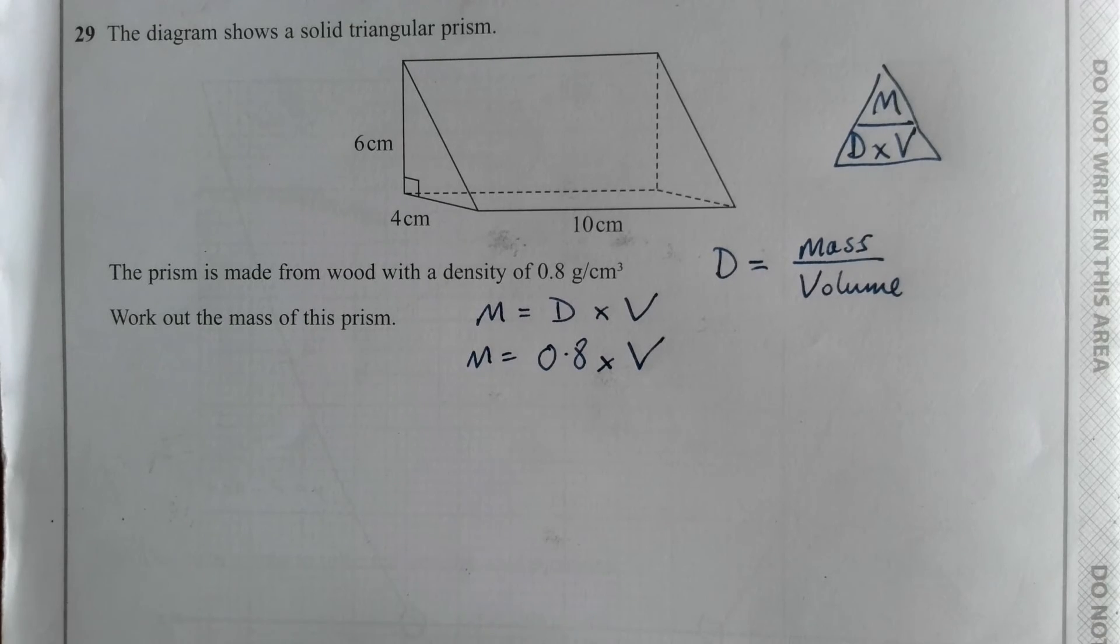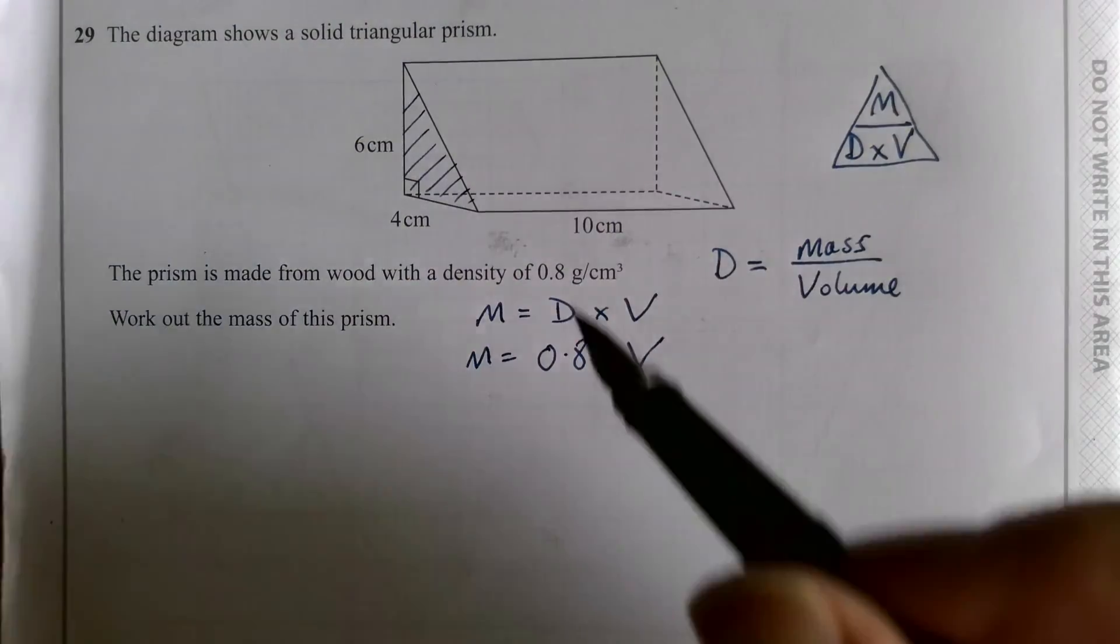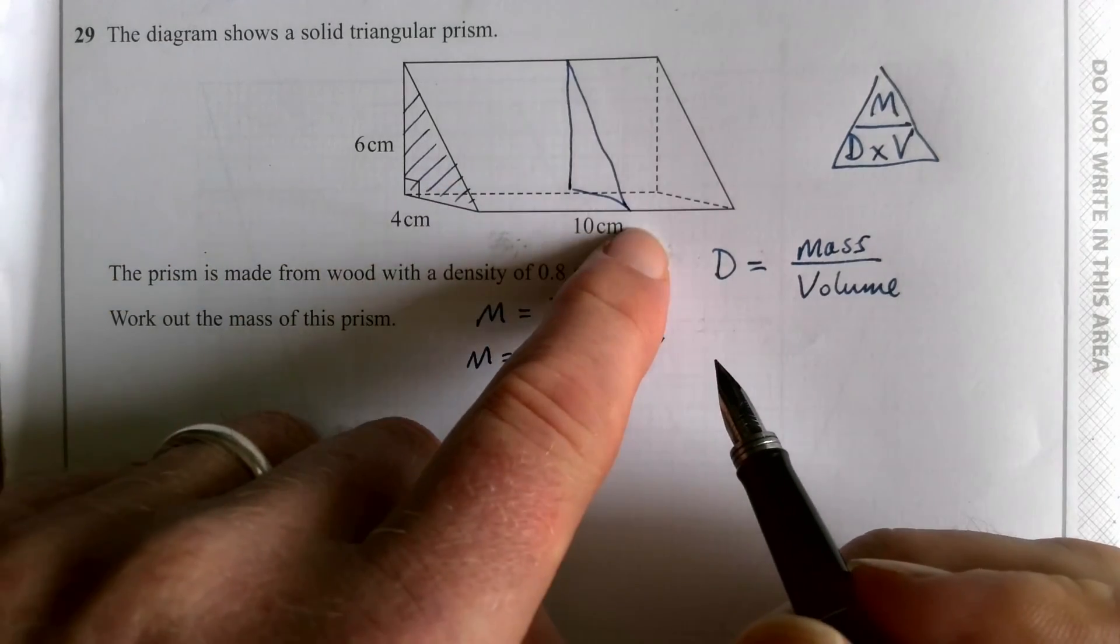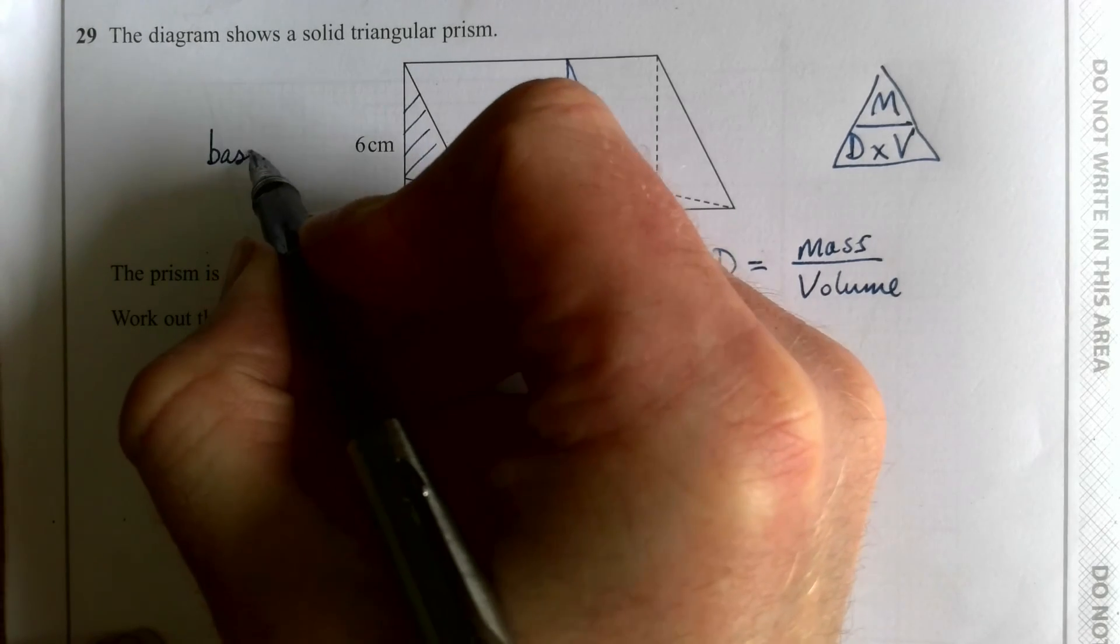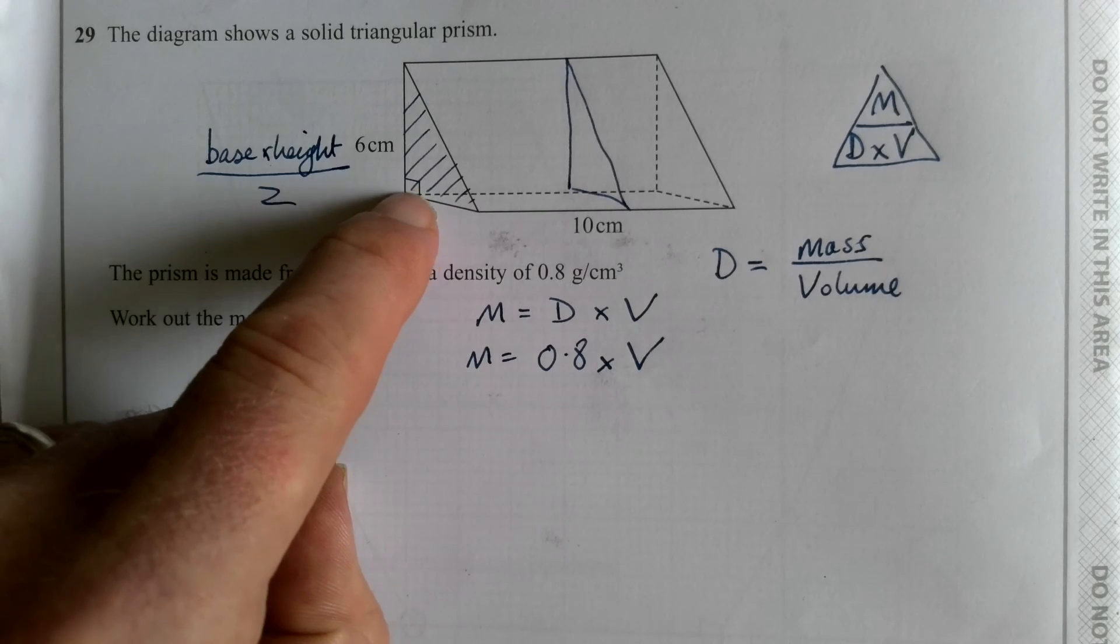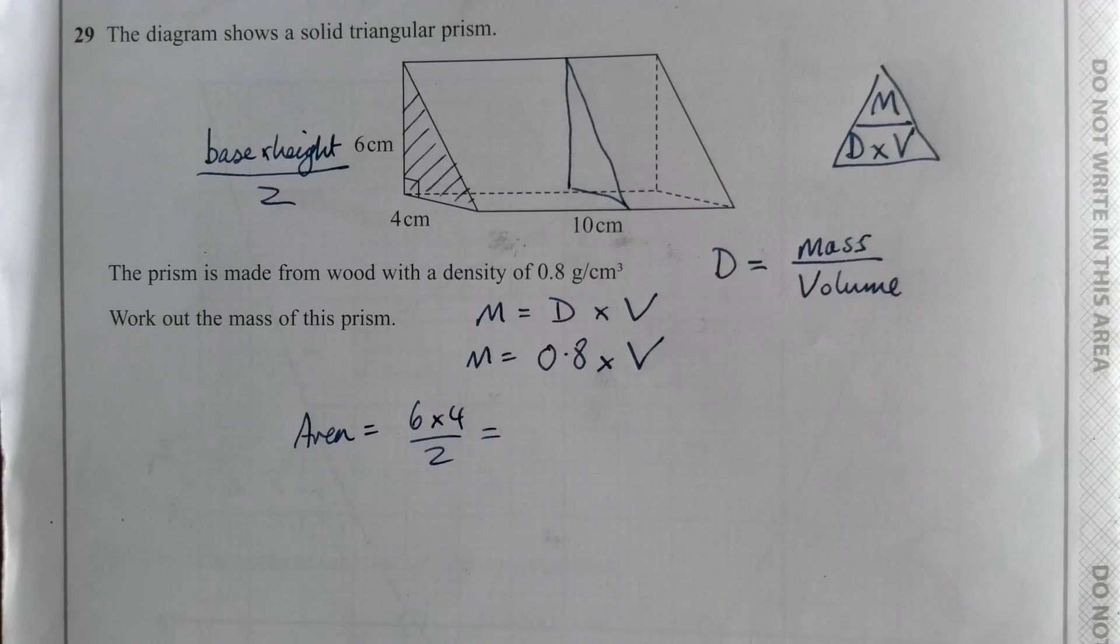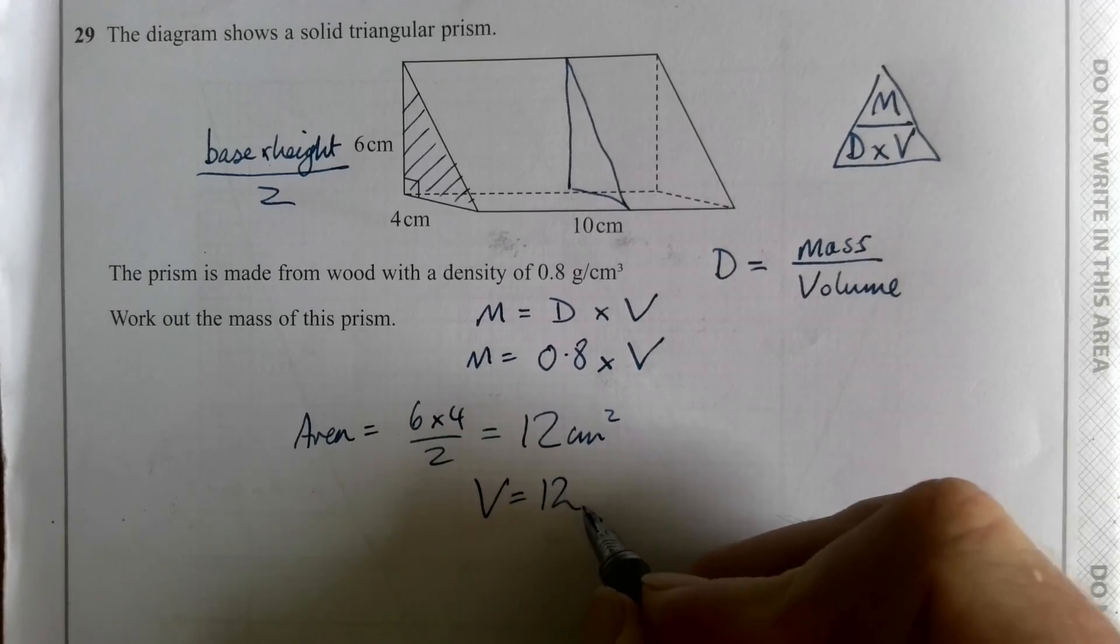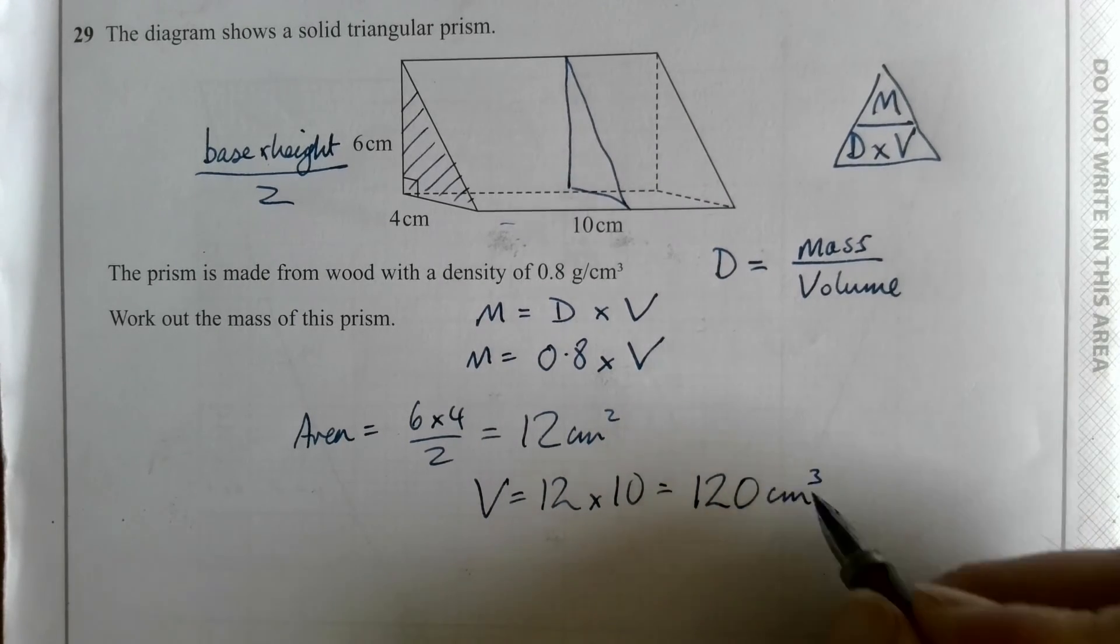Right, now the volume of a cuboid is length times width times height. The volume of any prism is the cross-sectional area multiplied by the depth. Any time I cut through this shape, I would get that same cross-sectional shape, wouldn't I? So I work out that area and I times it by the depth. So the area of a triangle is base times height divided by 2. Or base times perpendicular height, which just means where you've got 90 degrees. We've got 90 degrees there. So area is going to be 6 times 4 divided by 2. Put that into your calculator and you should get 12 centimetres squared. The volume is going to be 12 times the depth, which is 10, giving us 120 centimetres cubed.